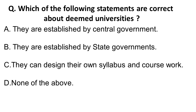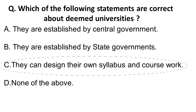Option A is incorrect — when universities are established by central government, they are called central universities, like University of Hyderabad, Delhi University, and JNU. When established by state governments, they are called state universities. Deemed universities have the autonomy of having their own syllabus and coursework. The correct answer is option C: they can design their own syllabus and course. They are not established by state or central government but by private entities, businessmen, or NGOs.